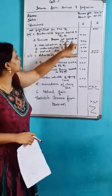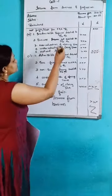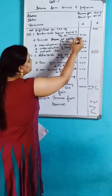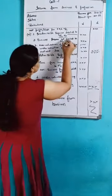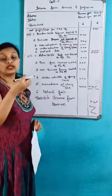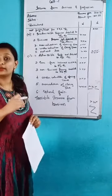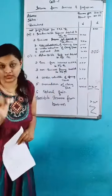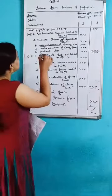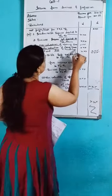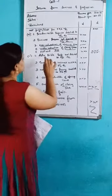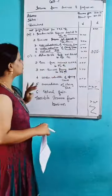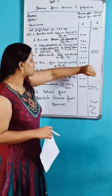Next one is business income not credited to P&L account. You should see which business incomes are not credited to the P&L account and write them in the amount column. Next one is overvaluation of opening stock — you should see if there is overvaluation of opening stock. Next one is undervaluation of closing stock. Next one is notional losses — what are the losses caused, you should write here. Then you add all these amounts to get a subtotal.